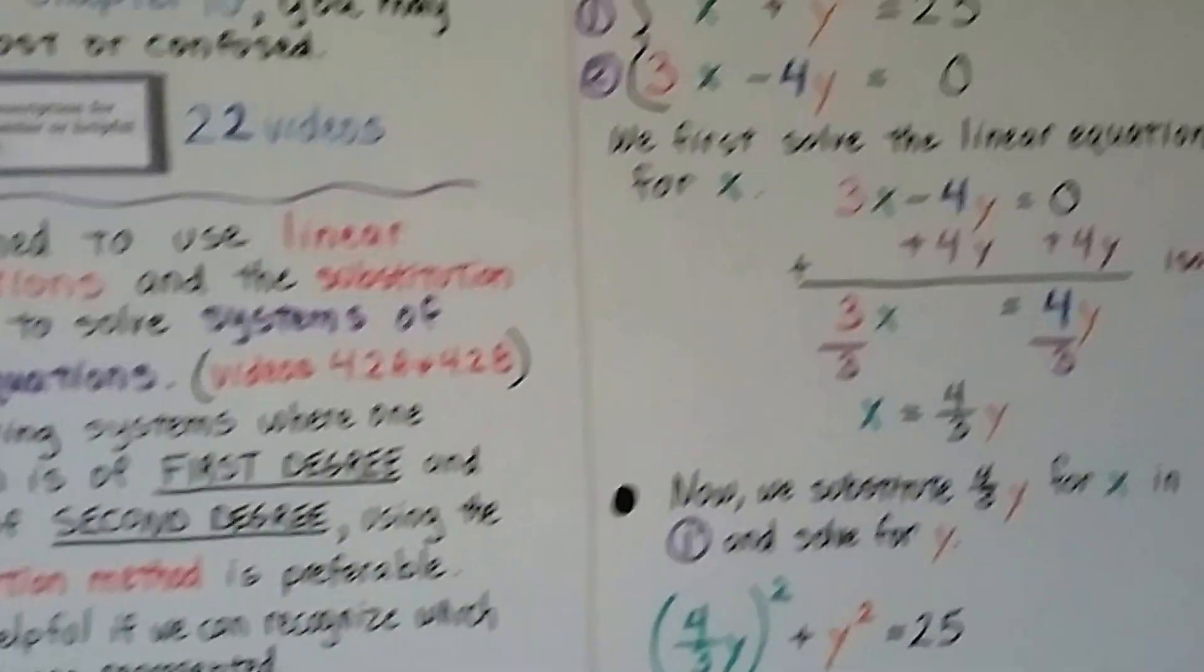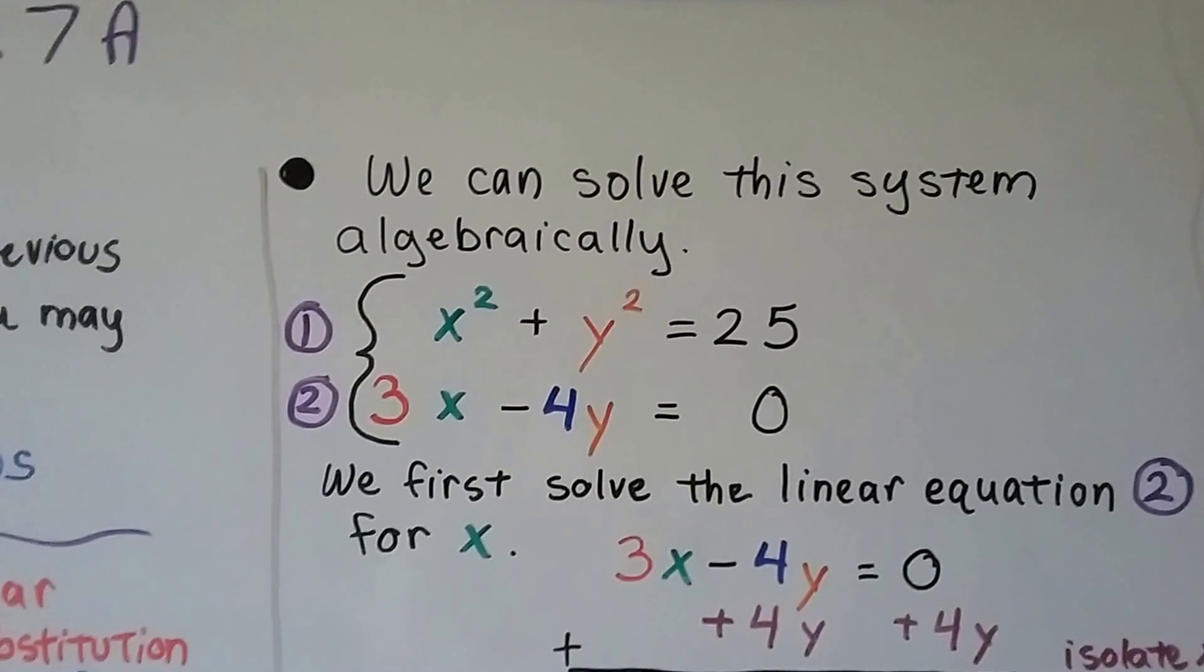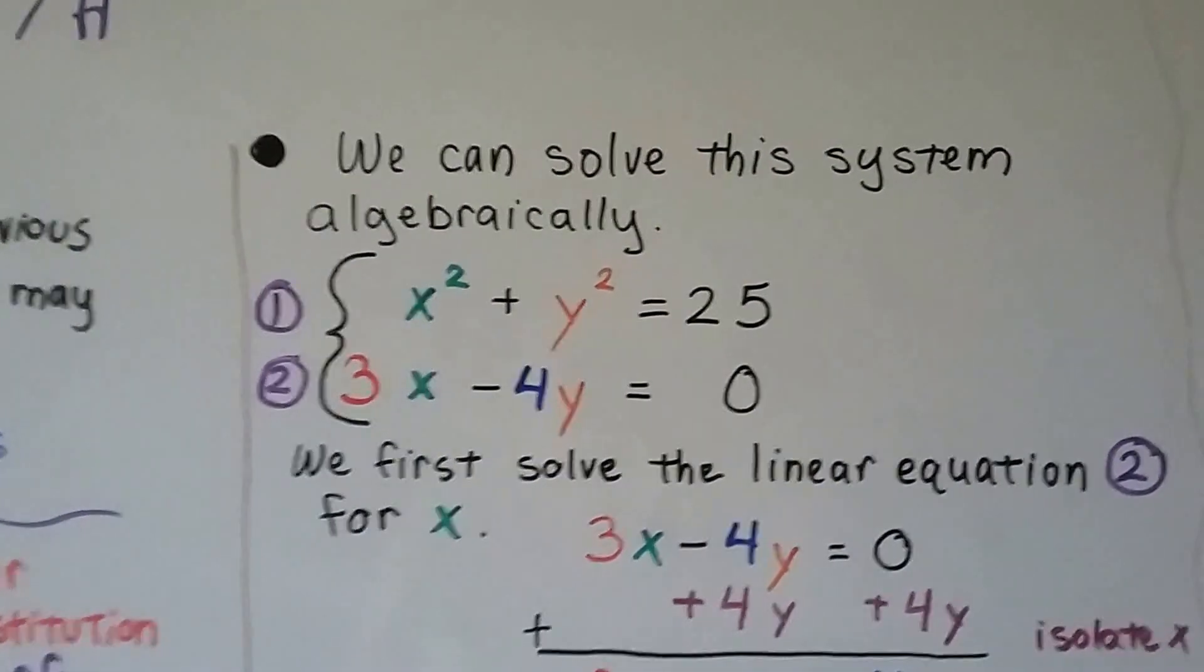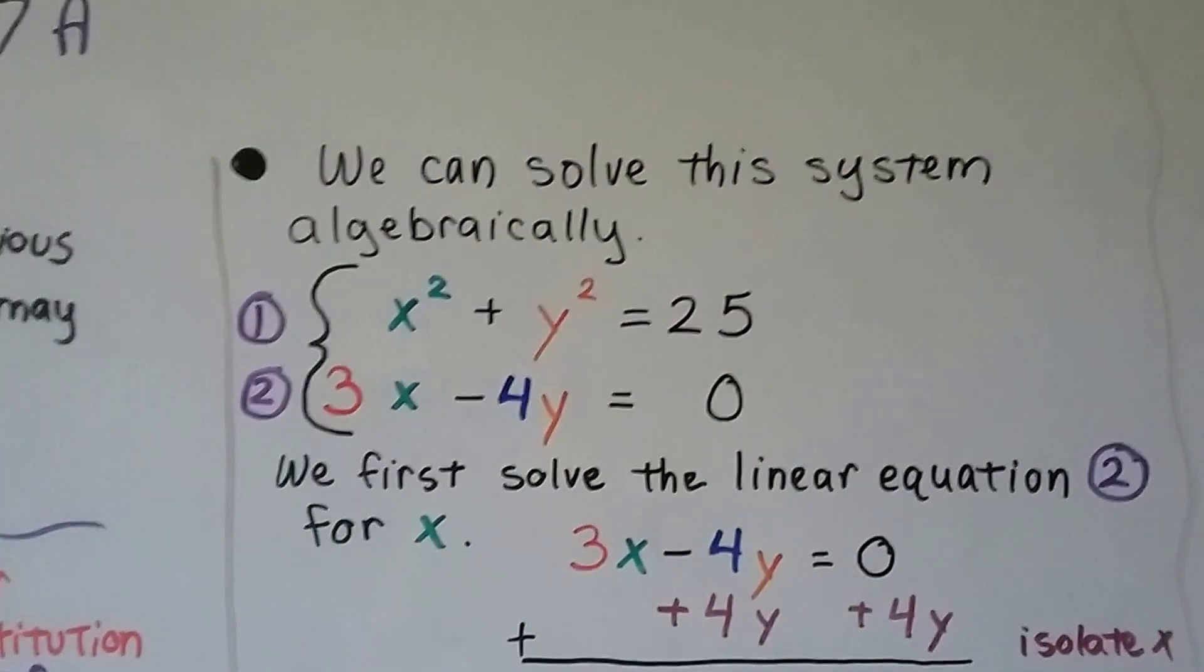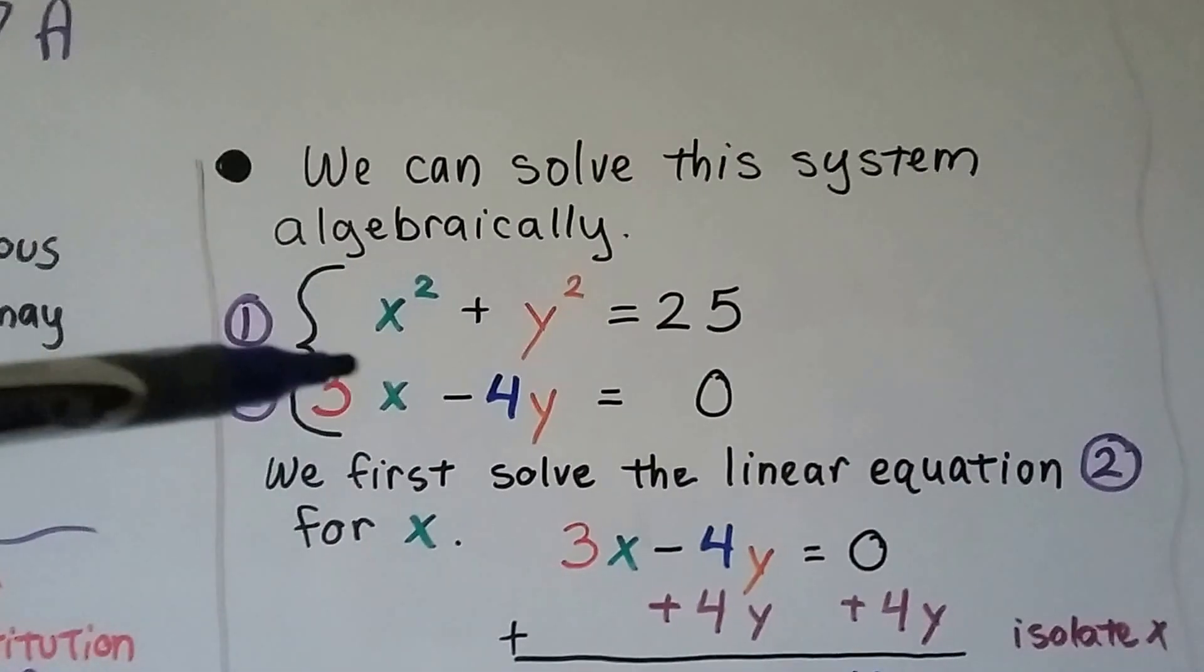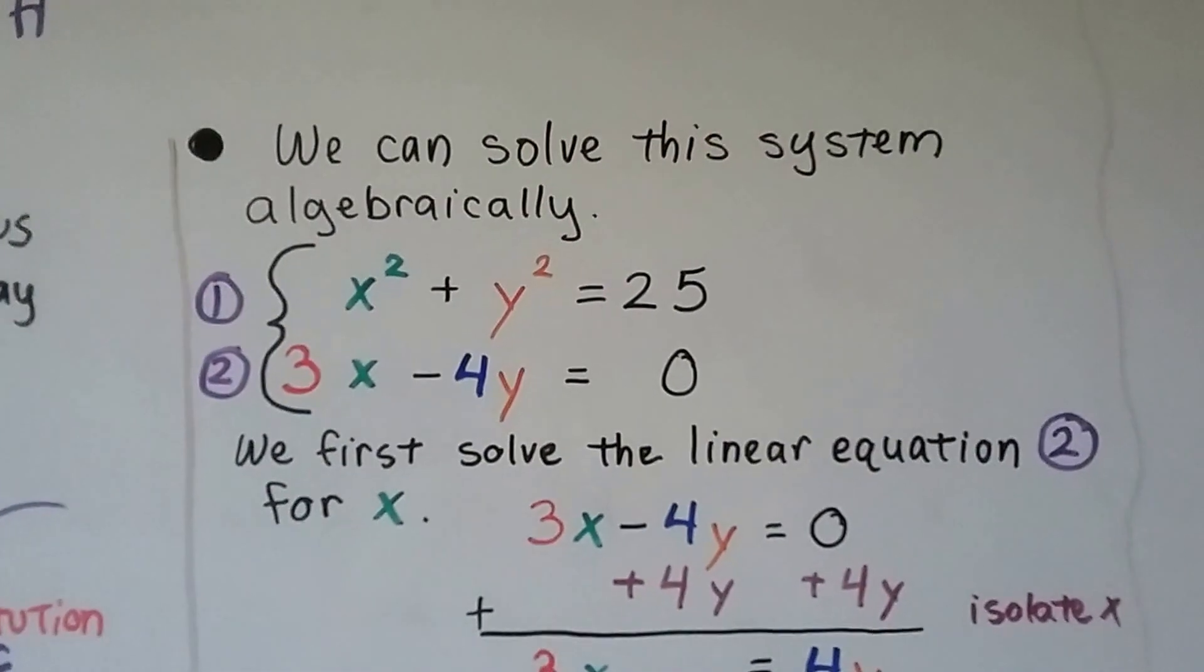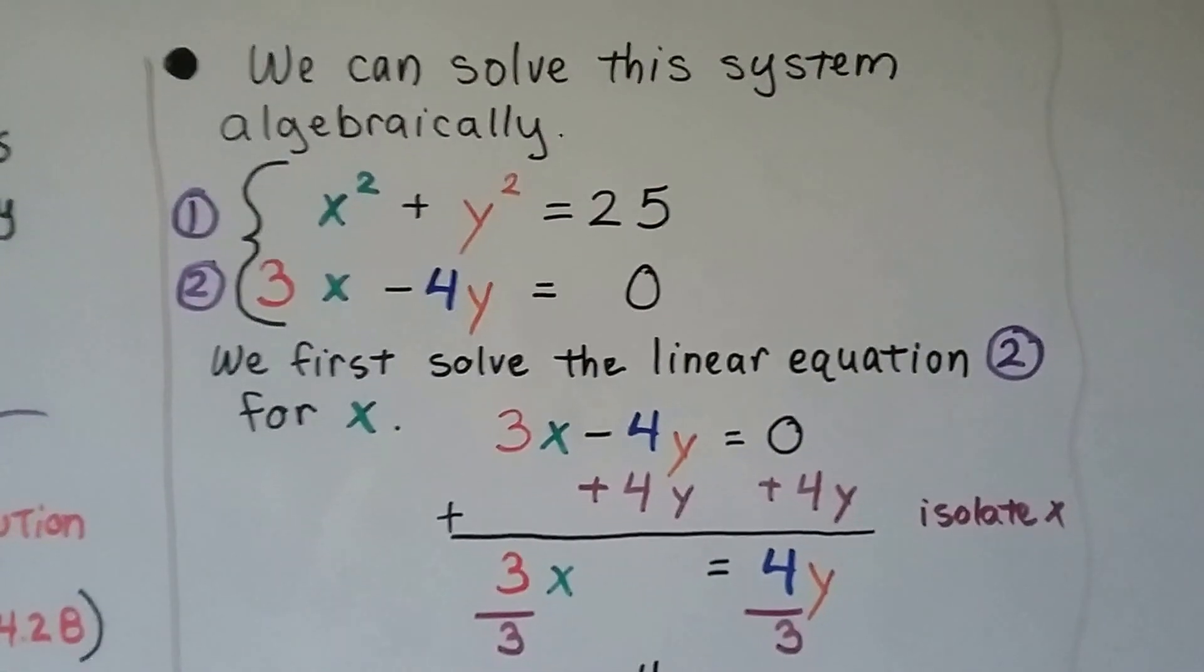Let's take a look at the first system. We can solve this system algebraically. Our first equation is x² + y² = 25, and our second equation is our linear one, 3x - 4y = 0. This is a first degree equation because the x is to the first degree. So we solve this linear one first, number two.